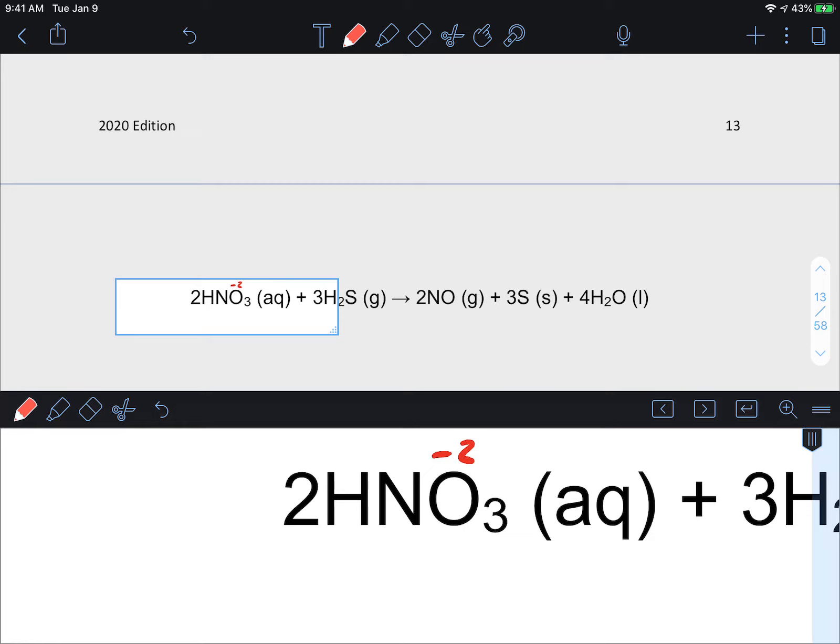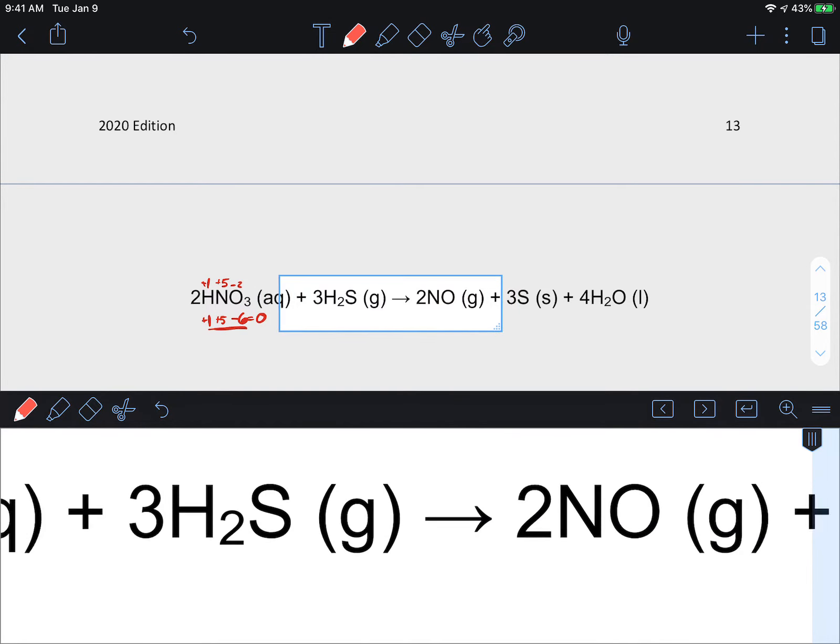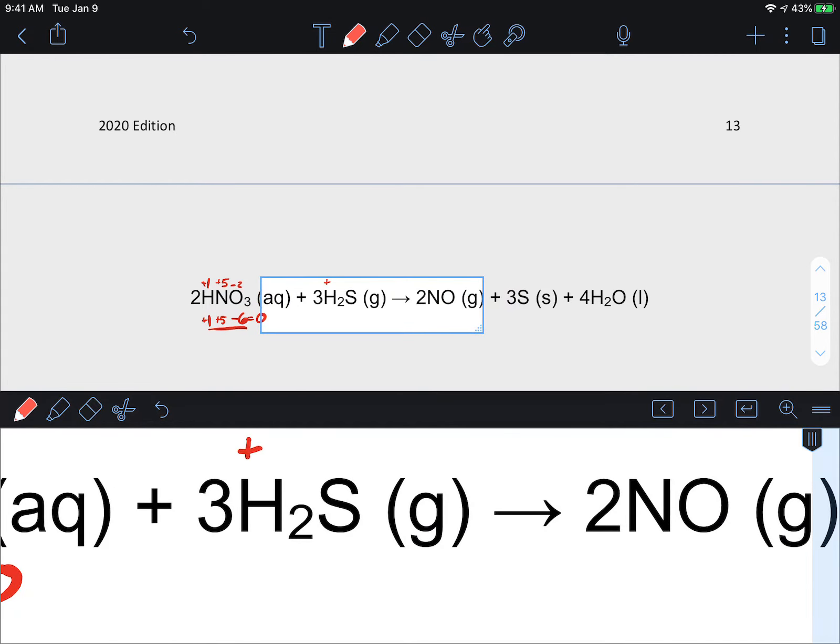So here we are always going to assume that oxygen is minus two, let's put our minus two above. So the minus two times three that gives us a minus six. Hydrogen is always assumed to be plus one. And so what am I missing? I'm missing a plus five for it to equal zero on the math here. And there's only one nitrogen so we're going to split that over that one nitrogen.